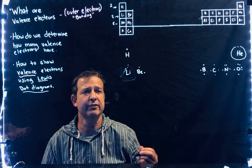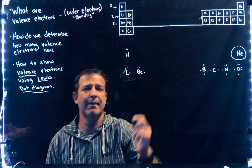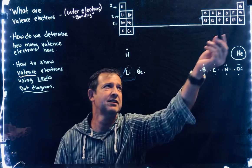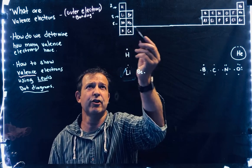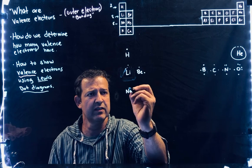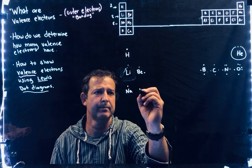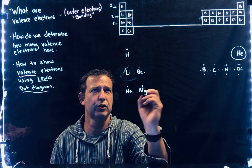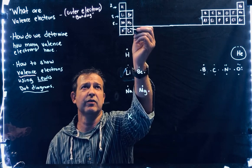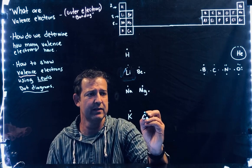Dropping down to sodium, which has 11 electrons total. Two fill the first shell, eight fill the second shell — that's full. Sodium is in the first column of the third row, so it has one valence electron. Potassium is right below sodium, also in the first spot of its row, so it also has one valence electron.